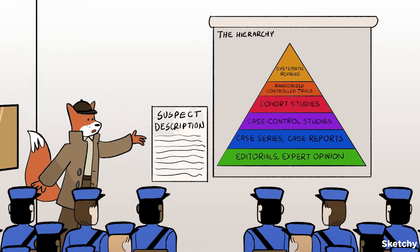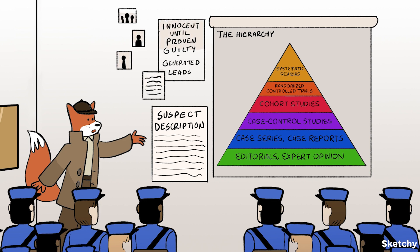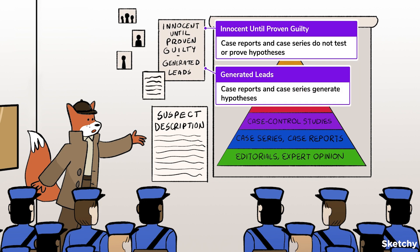Case reports and case series are important kinds of descriptive epidemiological studies, symbolized by Statlock's subject description — describing the evidence on hand. By descriptive, we mean that these studies are based on observation by a clinician, usually the treating clinician. They do not use a control group, they do not rigorously study an intervention — that is, treatment or prevention — there is no measure of effect, and they do not support association or causation between two factors. Just like case studies and case series, suspects are innocent until proven guilty — these studies do not seek to test or prove hypotheses. That must be done in a rigorously controlled, sufficiently powered experiment. Instead, these studies generate hypotheses, just like the generated lead Statlock is detailing to his colleagues.